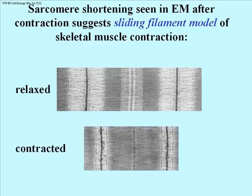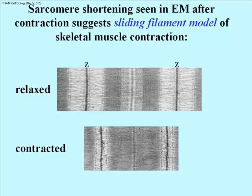We have a relaxed and a contracted sarcomere, and you can see that the contracted sarcomere is shorter. We can identify what's called a Z-line. That Z comes from the German Zwischen, which means between — so it really means the line between consecutive sarcomeres. The Z-lines have come closer together in the sarcomere of a contracted muscle; contraction is in effect pulling Z-lines closer together.